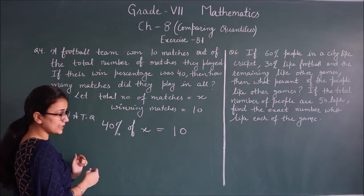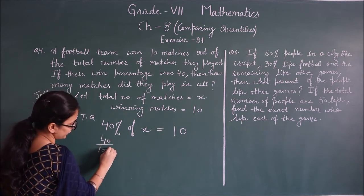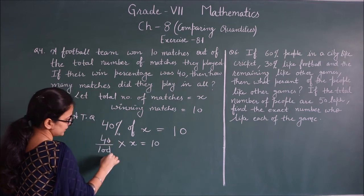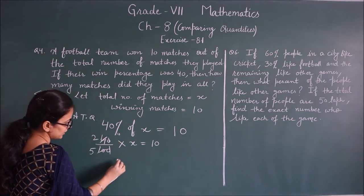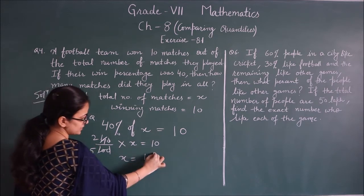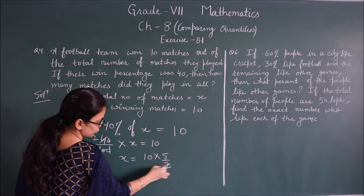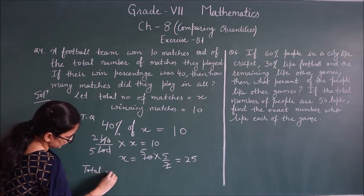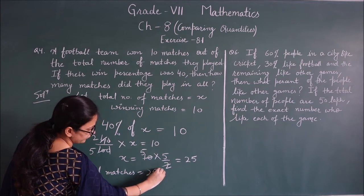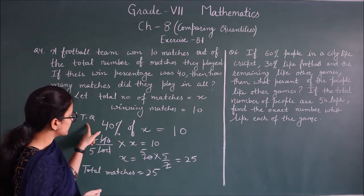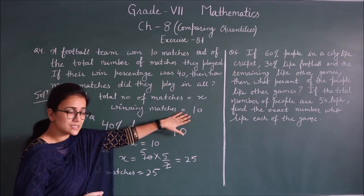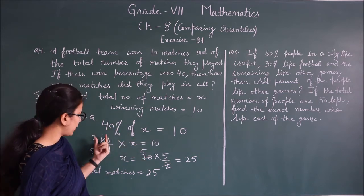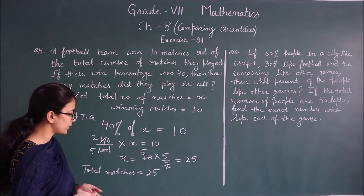So: 40/100 × x = 10. Simplifying, 2/5 × x = 10, so x = 10 × 5/2 = 25. Total matches played = 25. The team won 10 matches, which is 40% of 25. Clear.